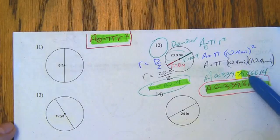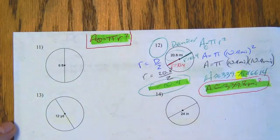Plug into the formula, again, same deal, and you end up with 339.8 miles squared.